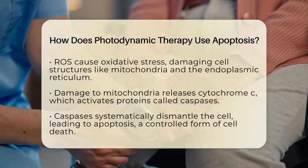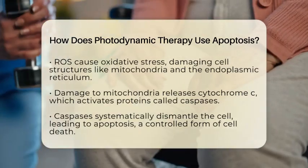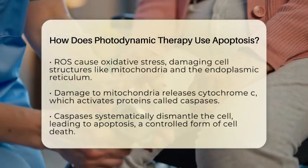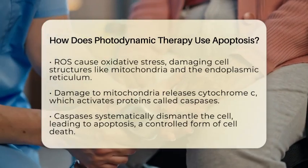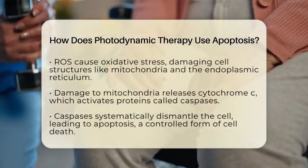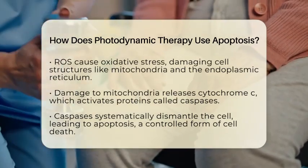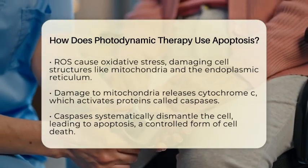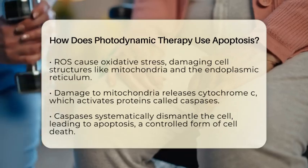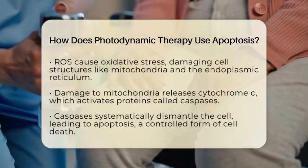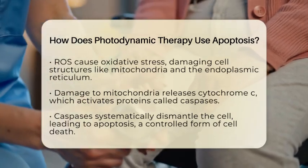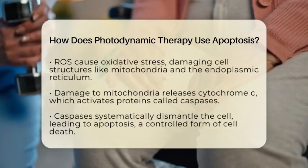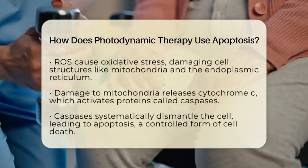In more detail, the ROS damage the mitochondria, which are the cell's energy factories. When mitochondria are injured, they release a protein called cytochrome C into the cell's fluid. This release activates a series of proteins called caspases, which are like executioners that systematically dismantle the cell.